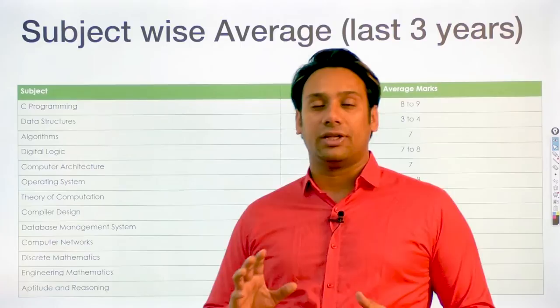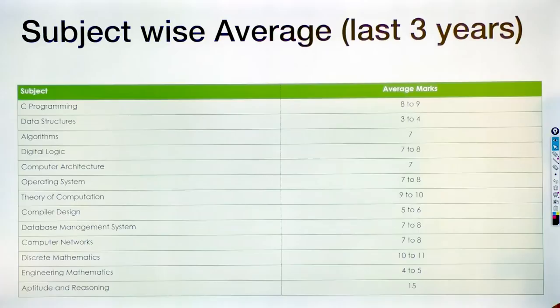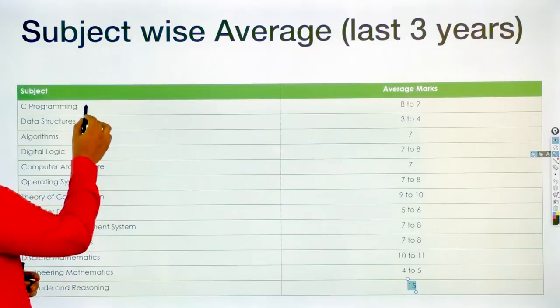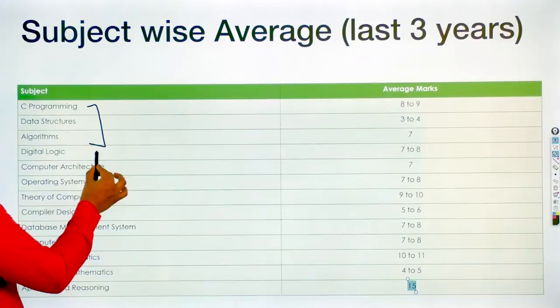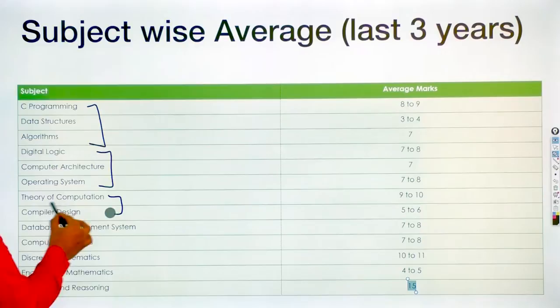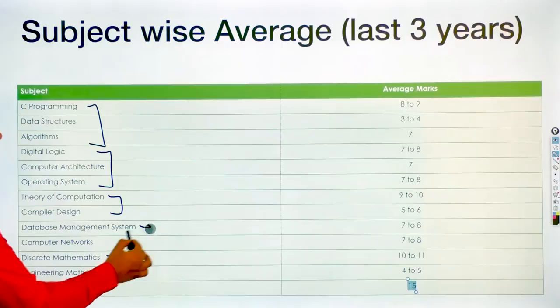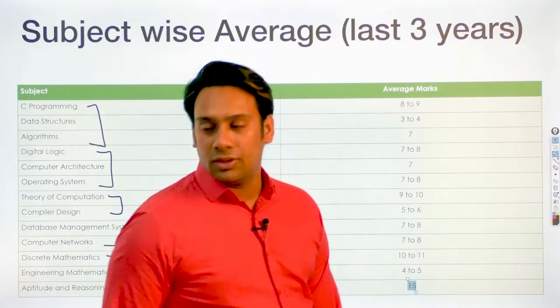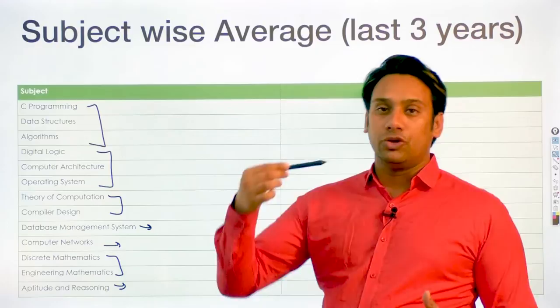There is something special that you will notice here. I have written these subjects in a group. For example, here we have C programming, data structures, and algorithms written in a group. We have digital logic, computer architecture/organization, and operating system. We have theory of computation and compiler design. Then you have discrete mathematics and engineering mathematics. And then DBMS, computer networks, and reasoning. Why have I written them in a group? These subjects are very much interrelated to each other — you cannot study data structures without studying C programming.